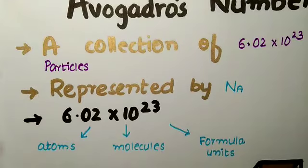Avogadro's number can be used for three things: number one, atoms; number two, molecules; and number three, formula units.